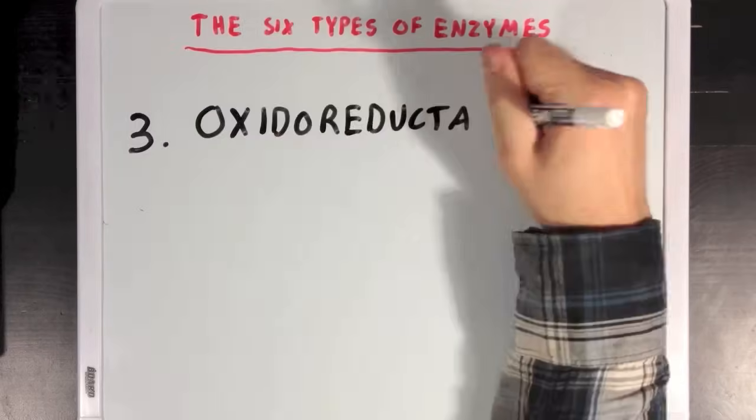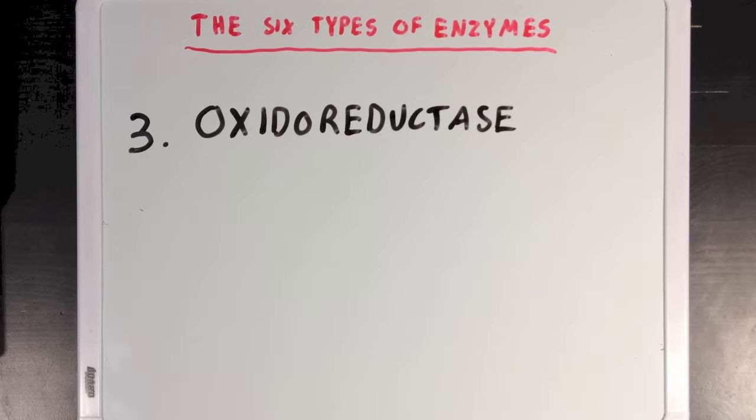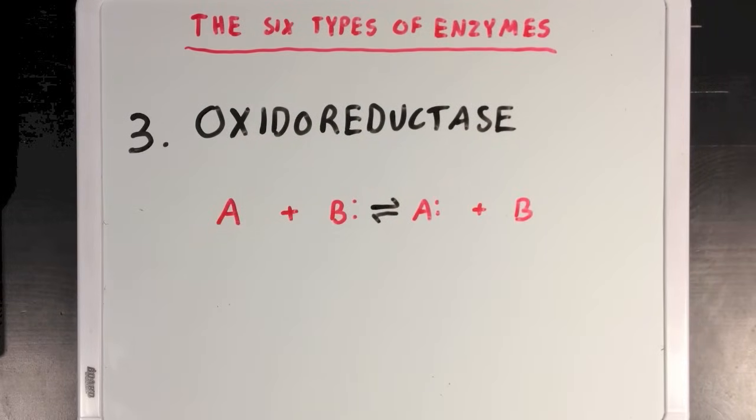Now, our third group is the oxidoreductase group, which is a little different from the others since it actually includes two different types of reactions. And these reactions involve transferring electrons from either molecule B to molecule A, or from molecule A to molecule B. Now, we say that an oxidase is directly involved in oxidizing, or taking electrons away from a molecule, while a reductase is involved in reducing, or giving, electrons to a molecule. And we call these enzymes oxidoreductases together because they can usually catalyze both the forward and reverse reactions, which is why I've used equilibrium arrows here instead of just a normal single-headed arrow.